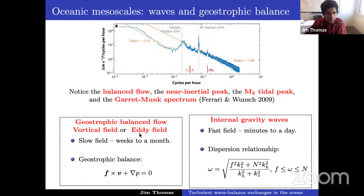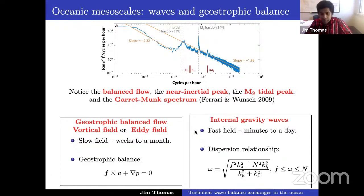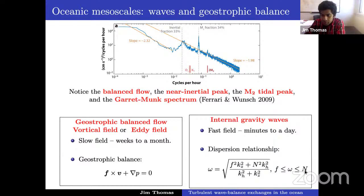These are the two components we saw in the flow. The geostrophic balanced flow is slow, evolving on a timescale of weeks to a month — the Coriolis term balances the pressure gradient term. The internal gravity wave field is a broadband spectrum evolving on a timescale of a few minutes for the fastest waves up to order days. Waves have a frequency ranging from f, proportional to the local rotation rate, to N, proportional to stratification. Depending on horizontal and vertical wave numbers k_h and k_z, you get different frequencies.